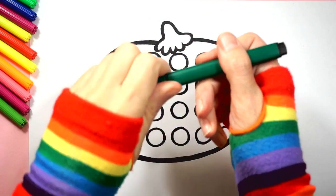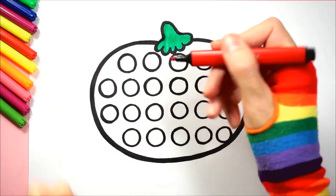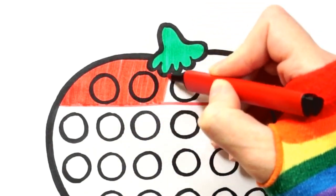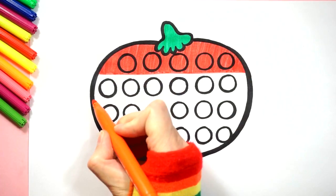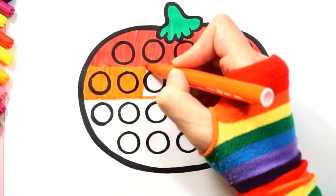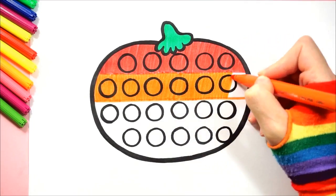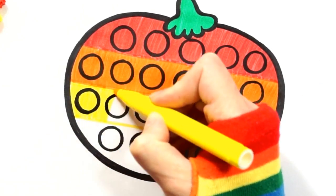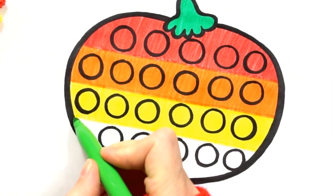Now carefully color our tomato inside the contour. We use a green marker, red marker, yellow marker, and green marker.